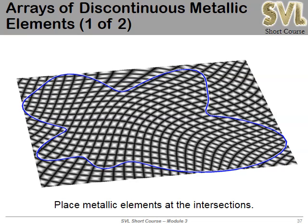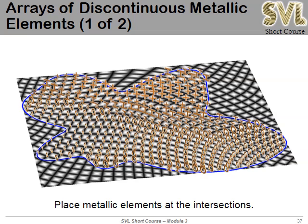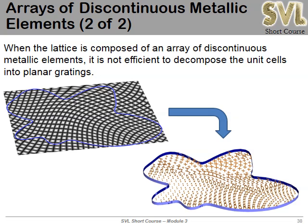Another tip: for arrays of metallic elements with very thin features, expanding into Fourier series would require thousands of terms. Instead, spatially vary just two planar gratings corresponding to the lattice axes, then place metallic elements wherever those two gratings intersect. This reduces from potentially thousands of planar gratings down to just two, dramatically improving efficiency while correctly positioning the elements.